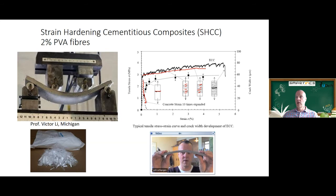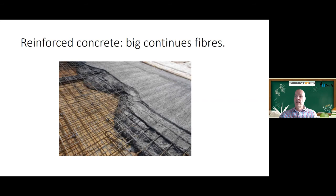Steel reinforcement bars work similarly to large continuous fibers. Think of them as big fibers placed where tensile loading is expected. When a crack forms in the concrete, the steel takes over the tensile load and a new crack forms somewhere else. This distributes cracking and keeps individual crack widths small — that is how reinforced concrete is designed to work.